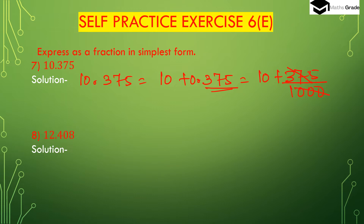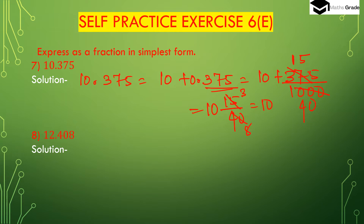Now divide 375 and 1000. The common factor is 25. 375 divided by 25 is 15, and 1000 divided by 25 is 40. Then 15 divided by 40 — the common factor is 5. 15 divided by 5 is 3, and 40 divided by 5 is 8. So we get 3 divided by 8.